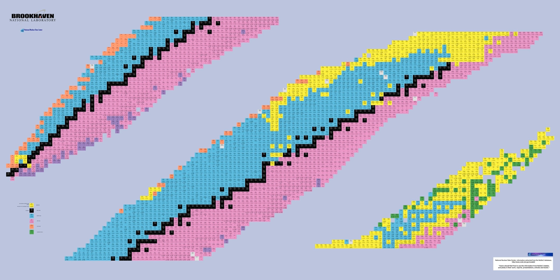Beyond the neutron drip line along the lower left, nuclides decay by neutron emission. Beyond the proton drip line along the upper right, nuclides decay by proton emission. Drip lines have only been established for some elements.